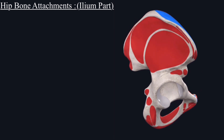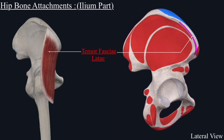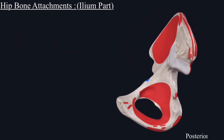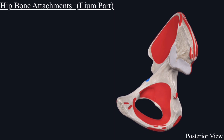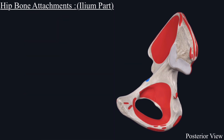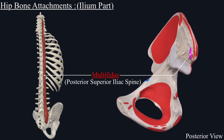The tensor fasciae latae muscle originates from the outer lip of the iliac crest between the iliac tubercle and the anterior superior iliac spine. From the posterior end of the iliac crest originates the longissimus thoracis muscle. Close to it, from the posterior superior iliac spine, originates the multifidus muscle.